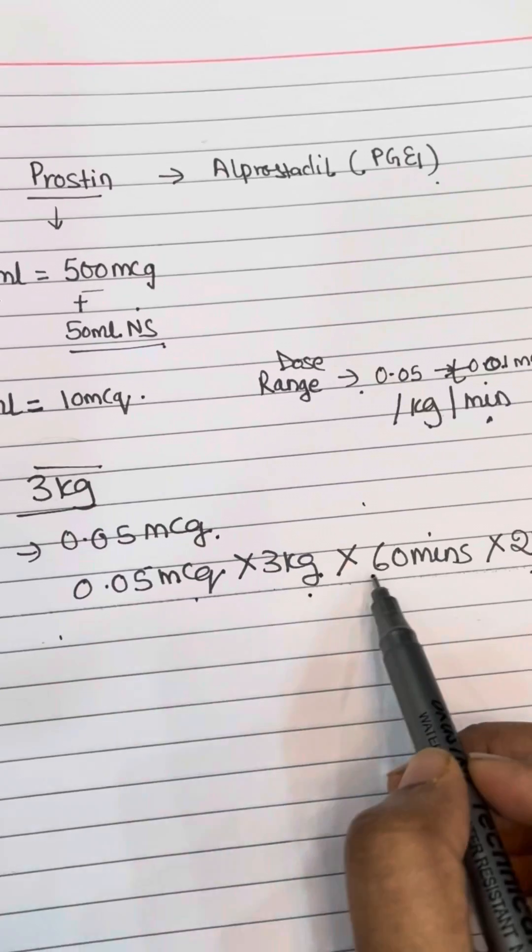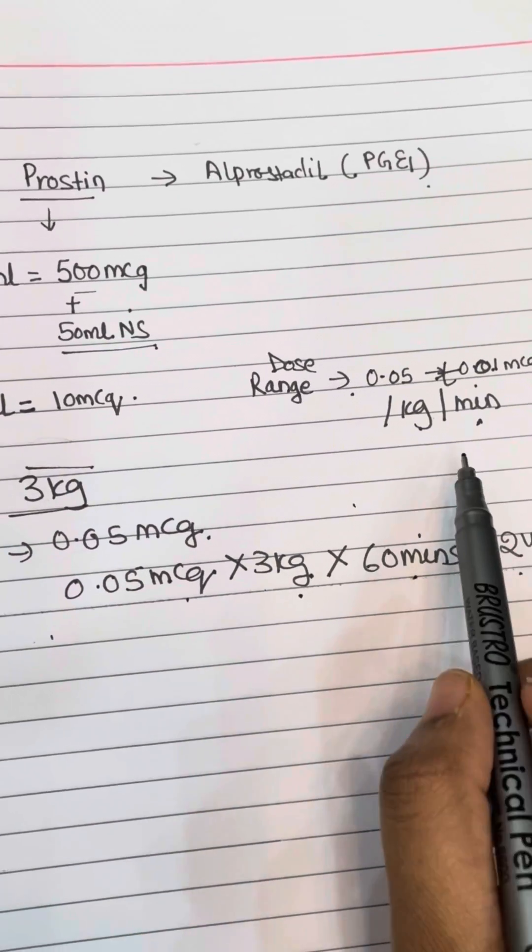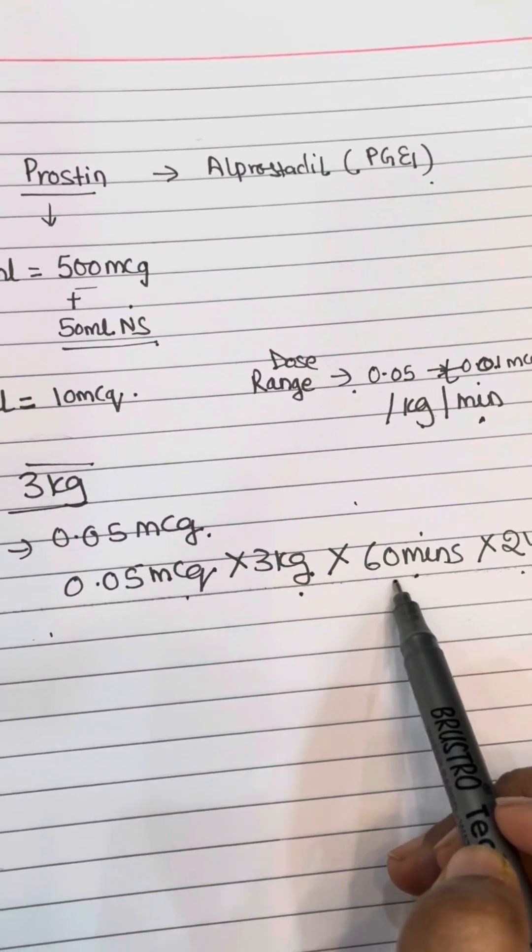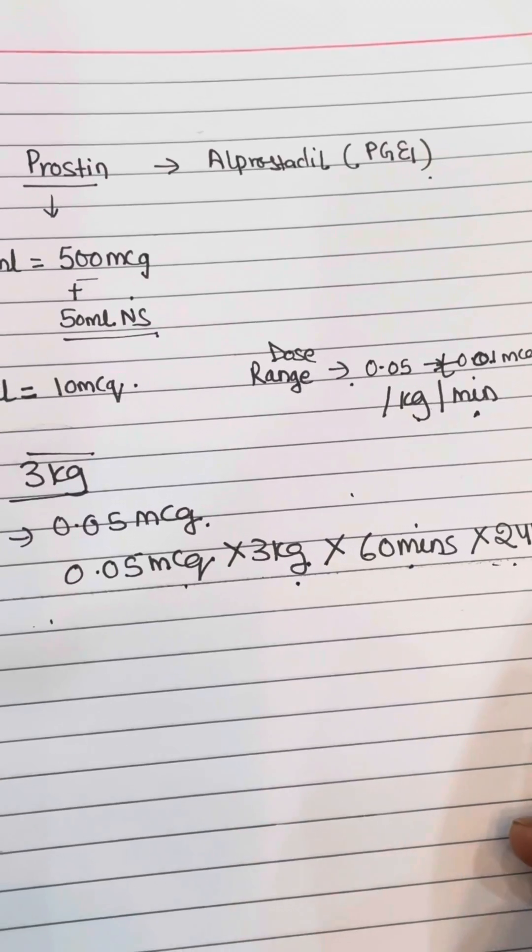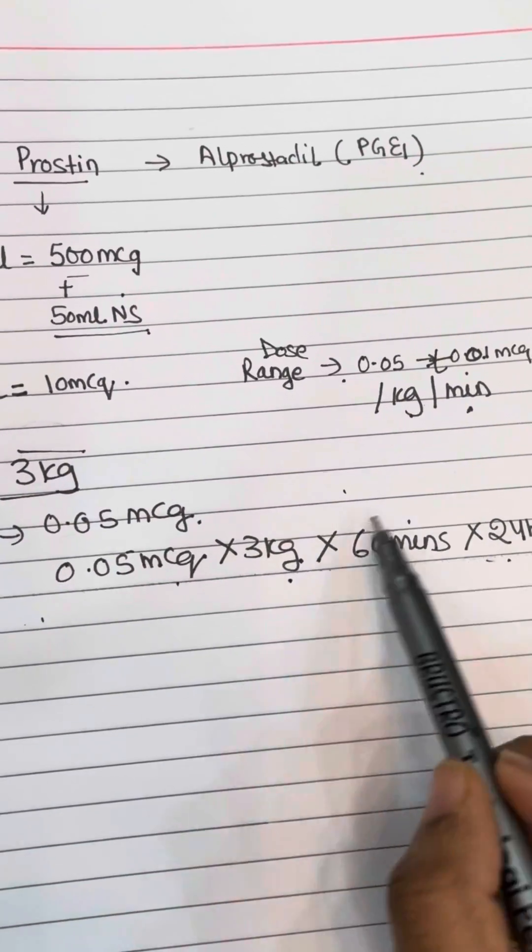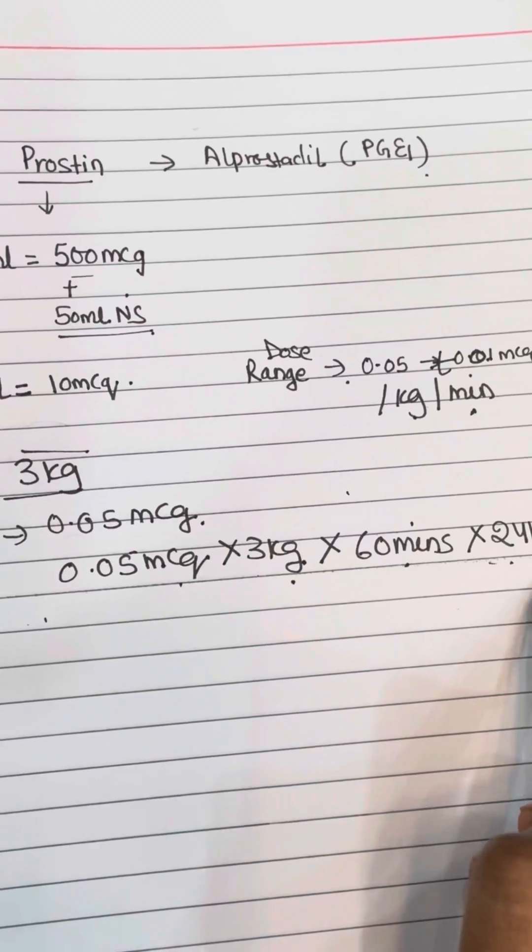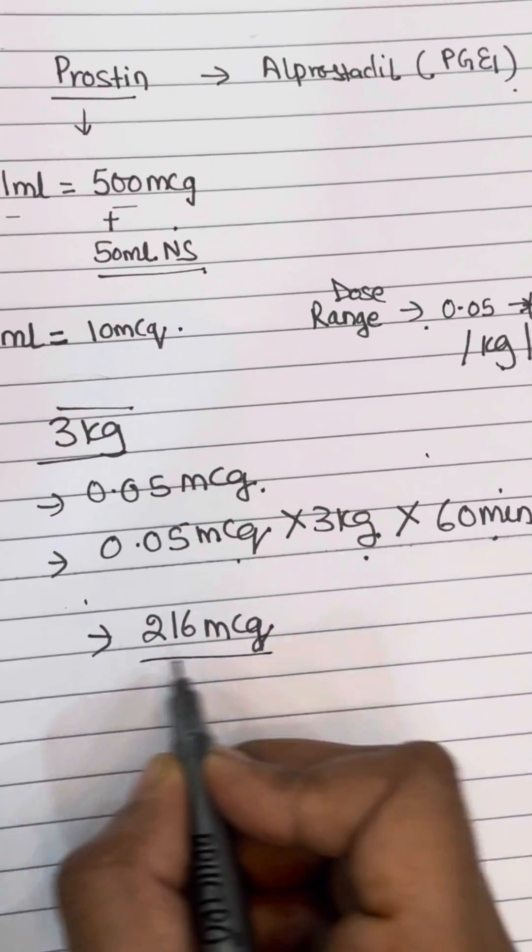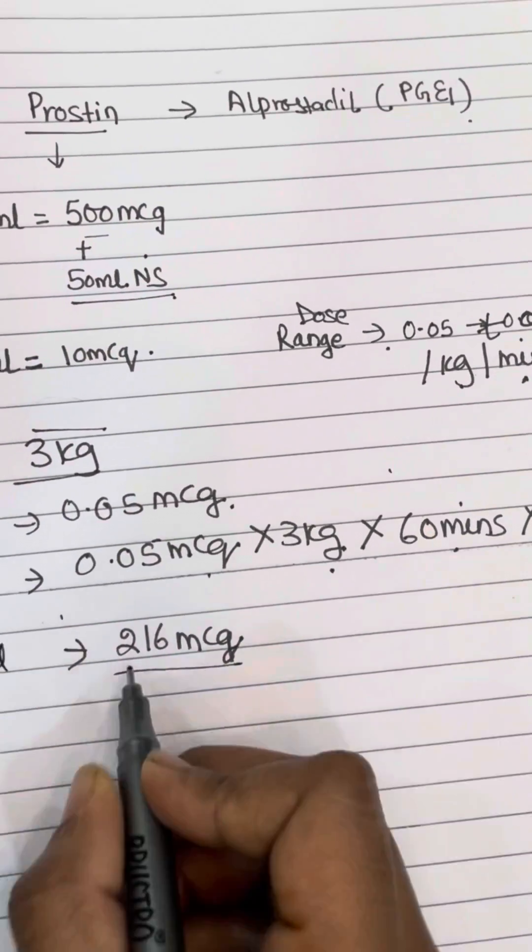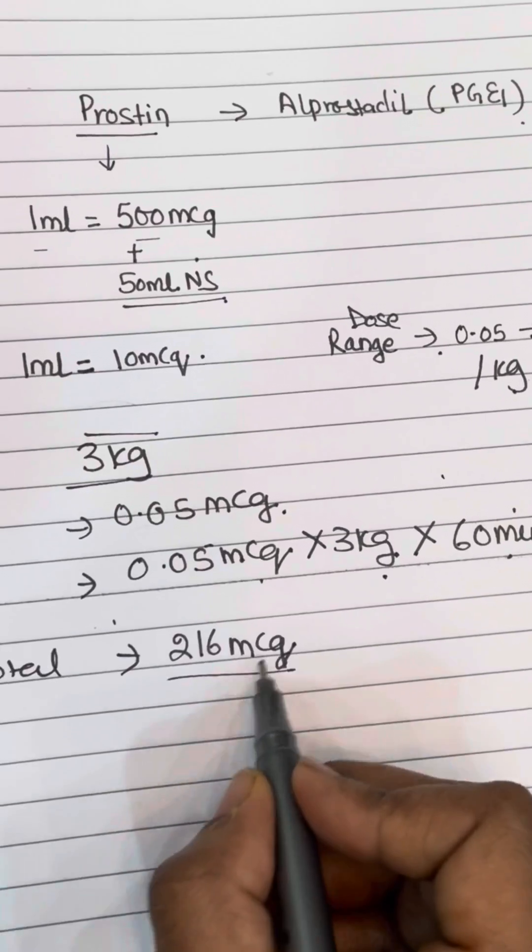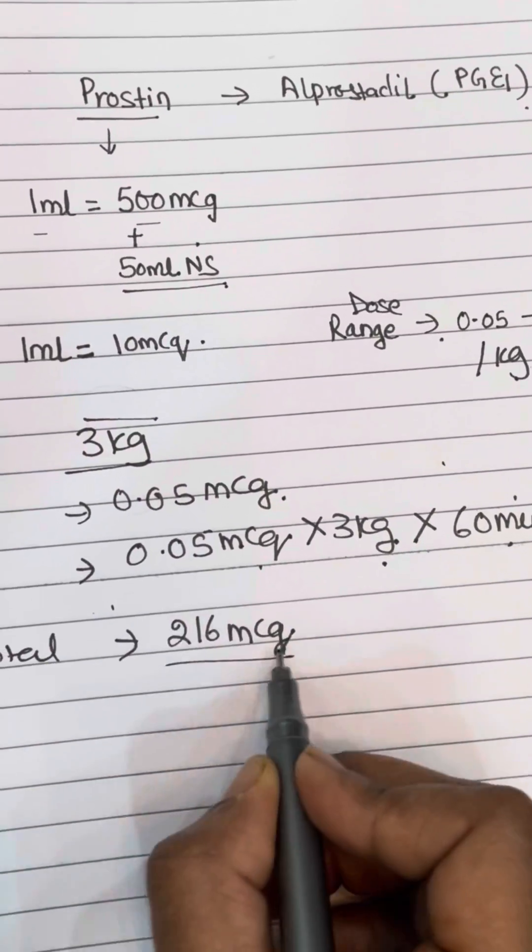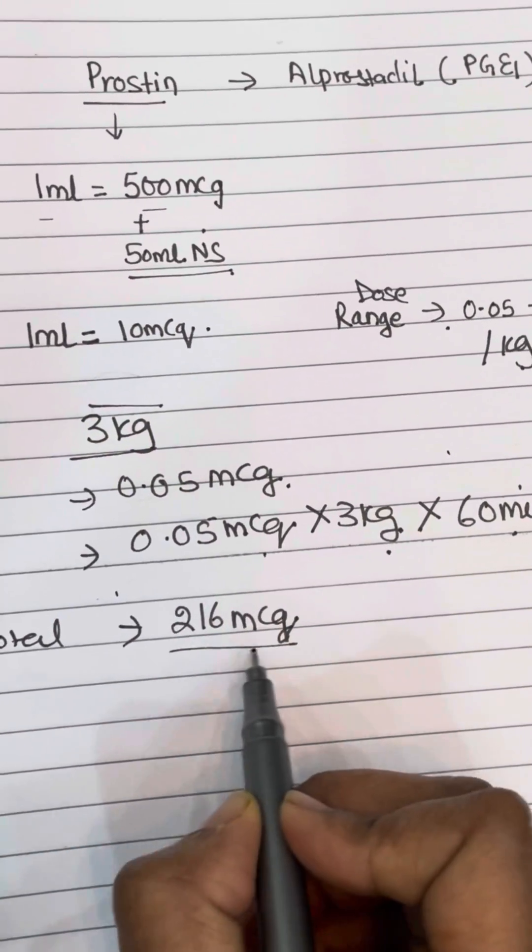...that is 3kg, into 60 minutes because it is per minute, into 24 hours. Because it's the total dosing that will go in a day to that baby, the total comes to 216 micrograms. So this is the total amount of prostin that is to be given in a day.